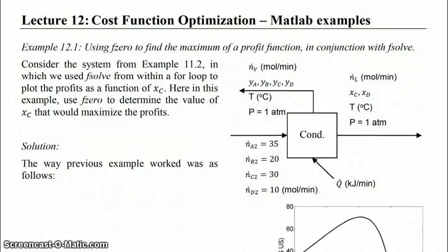In lecture 12 of the class we are going to look at cost function optimization, specifically focusing on MATLAB examples. In this screencast we're going to look at the first example, example 12.1, where we're going to use fzero to find the maximum of a profit function in conjunction with fsolve.